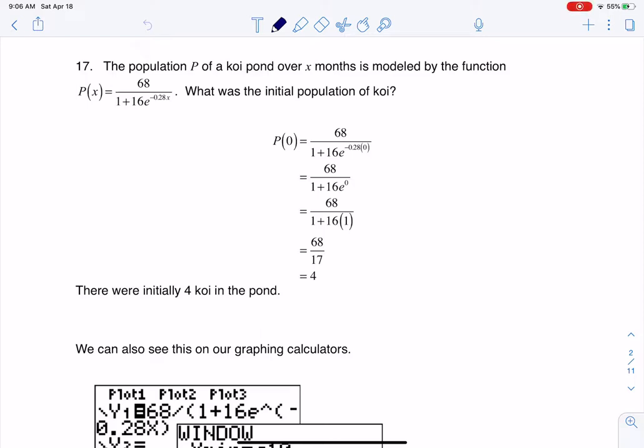Hey Math 31, I had a question coming out of section 6.8 number 17 and here we were given a logistic equation modeling the population of koi in this pond, and it says what was the initial population.